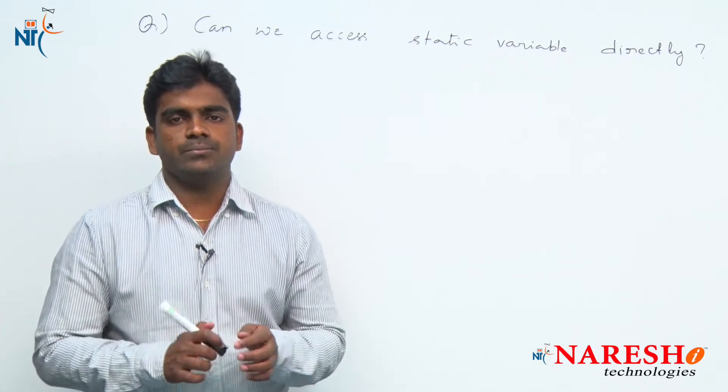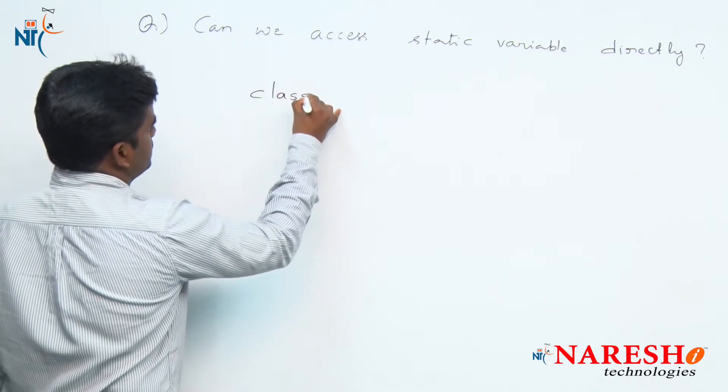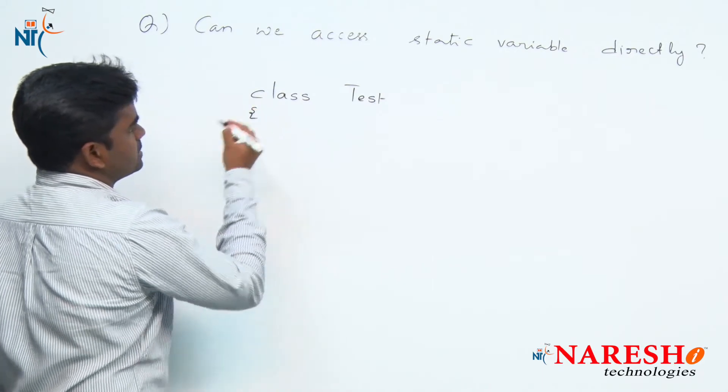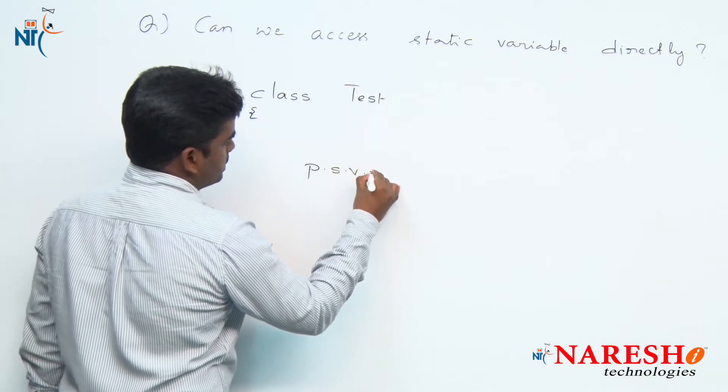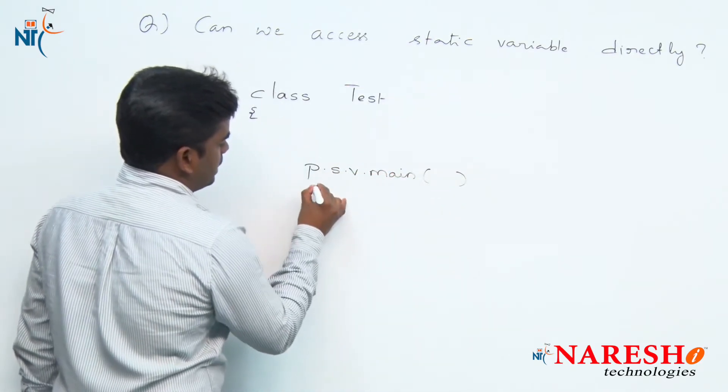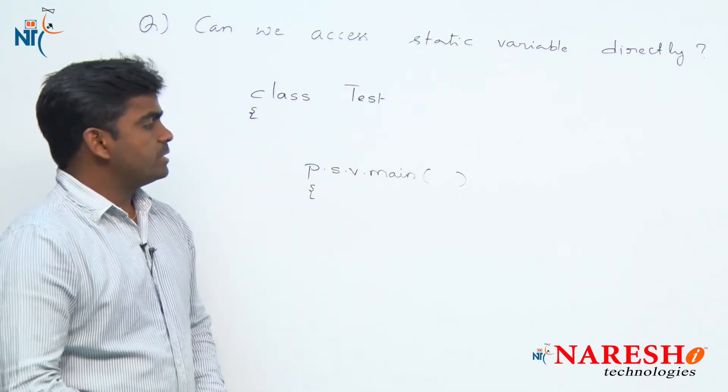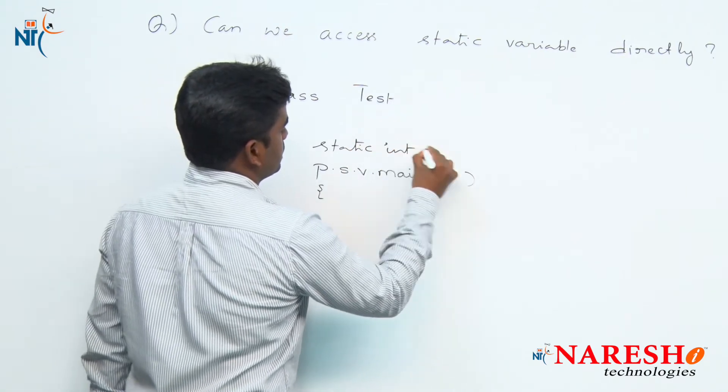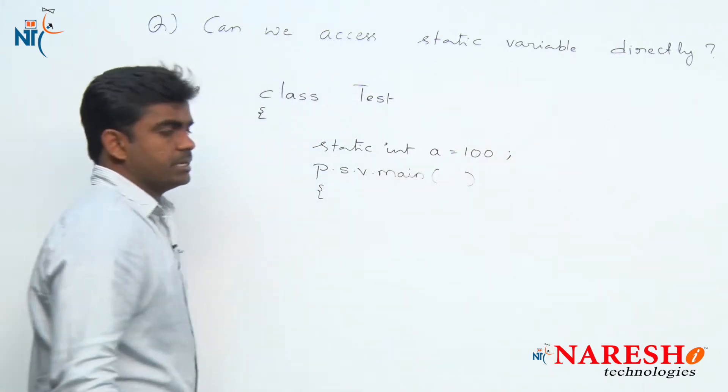Let's see the cases. Take one class named Test. In the Test class, we are writing the main method - public static void main. I am not writing it completely. Here I am declaring one static variable: static int a = 100.